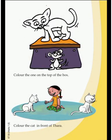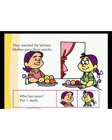It's from our textbook. Color the one on the top of the box. Color the cat in front of Tara. Here, our Tara and Meenu reach the kitchen — mother gave them snacks.